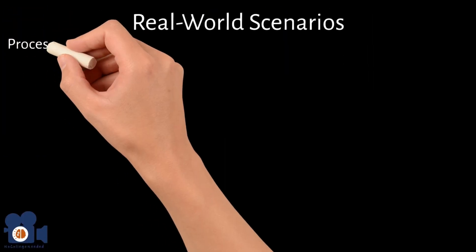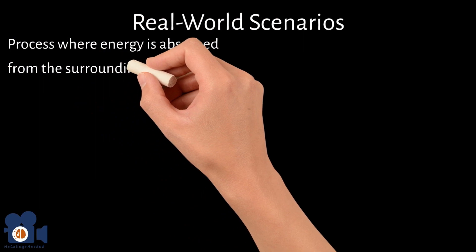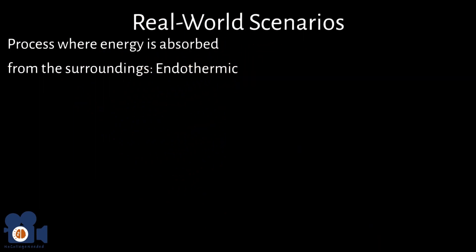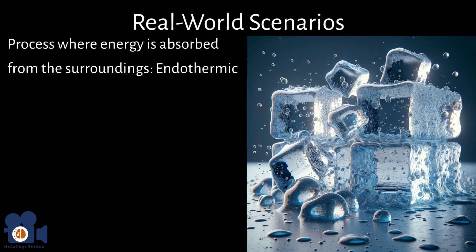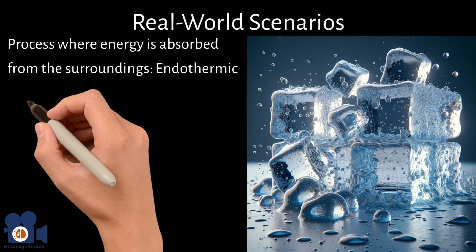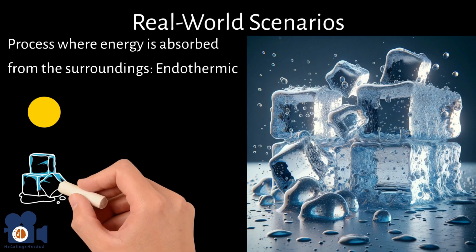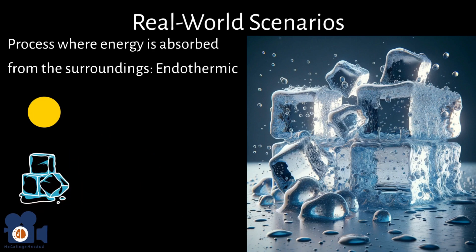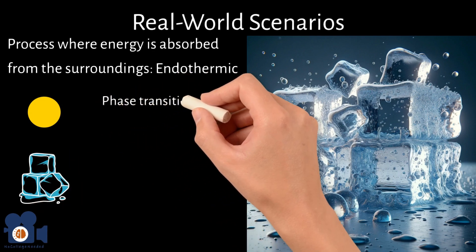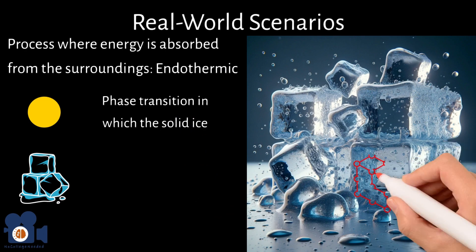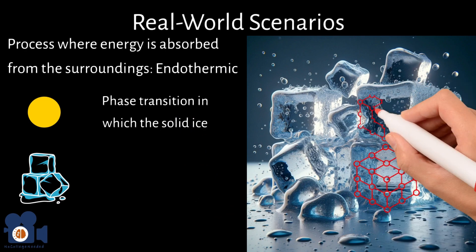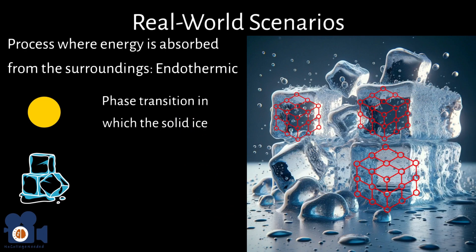Now consider a process where energy is absorbed from the surroundings — this is an endothermic process. For this, let's use the example of the melting of ice, which involves the absorption of heat from its surroundings. This is considered a phase transition in which the solid ice, a well-defined structure of water molecules held in a crystal lattice, transforms into liquid water.